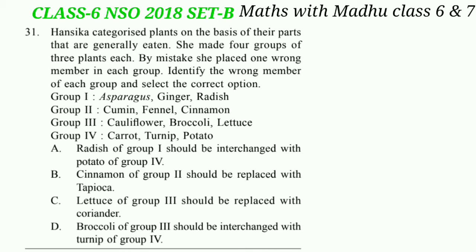Hansika categorized plants on the basis of their parts that are generally eaten. She made four groups of three plants each. By mistake she placed one wrong member in each group. Identify the wrong member of each group and select the correct option.